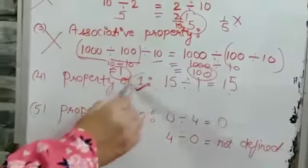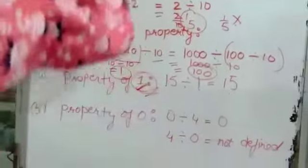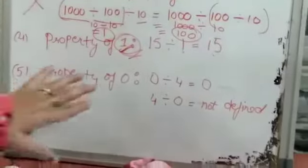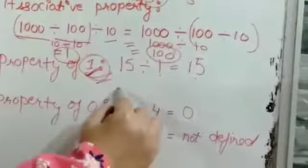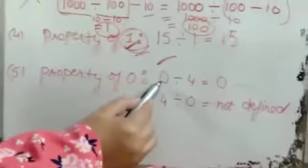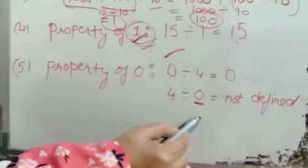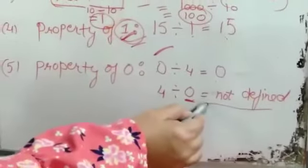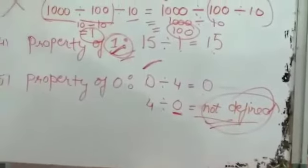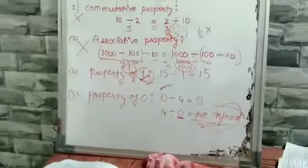Last property of 0. If 0 is acting as a dividend, the answer will be 0, we all know. But if 0 is acting as a divisor, such type of questions are not permitted. That's why I have written not defined. Please go through these five properties. That's all.